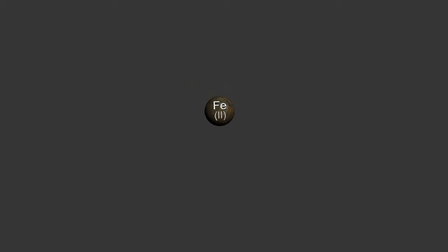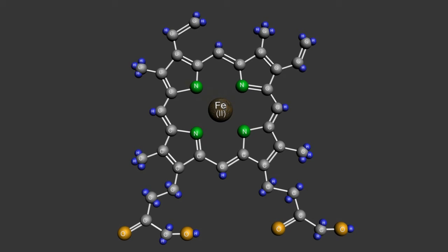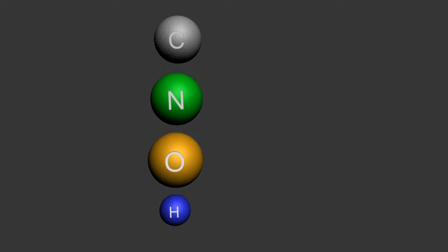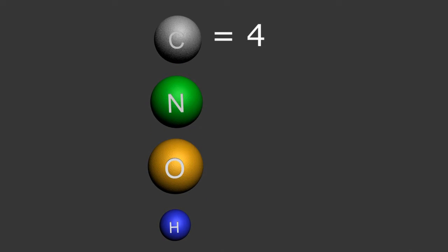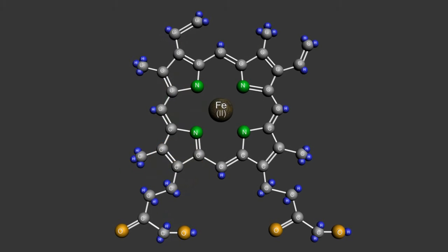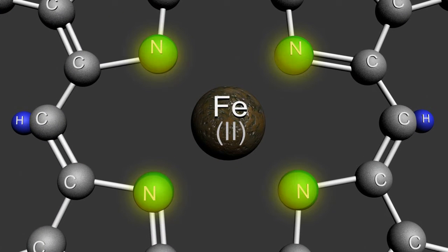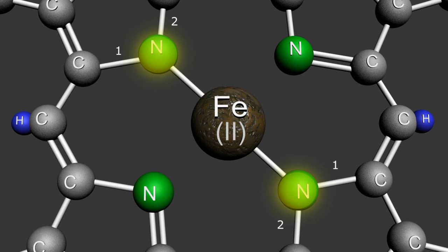To complete our heme molecule, we simply need to attach the pyrrole ring to our ferrous iron atom. For a complete stable molecule, each carbon atom has to have four connections to other atoms, nitrogen 3, oxygen 2, and hydrogen 1. I want to focus on the four nitrogen atoms at the center of the porphyrin ring. Two of the four nitrogens only have two connections to adjacent atoms and will therefore form standard covalent bonds with the adjacent iron atom, completing each nitrogen's three connections.